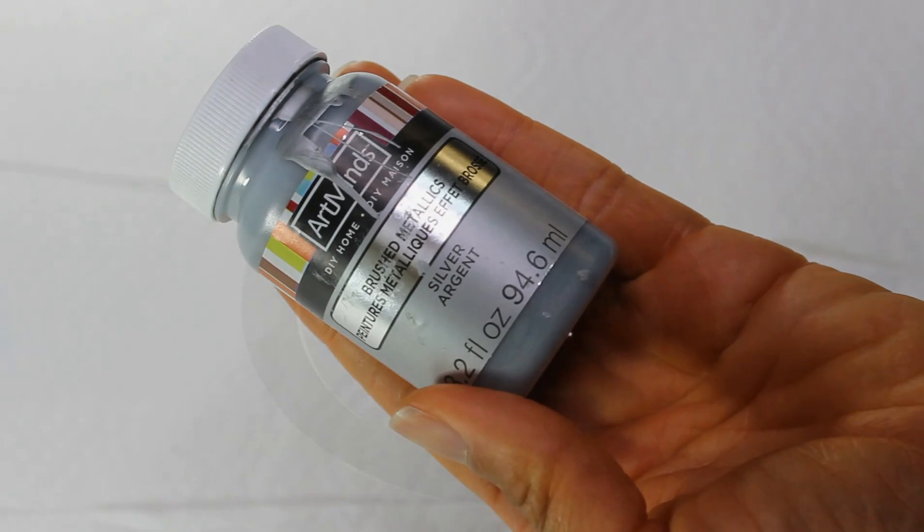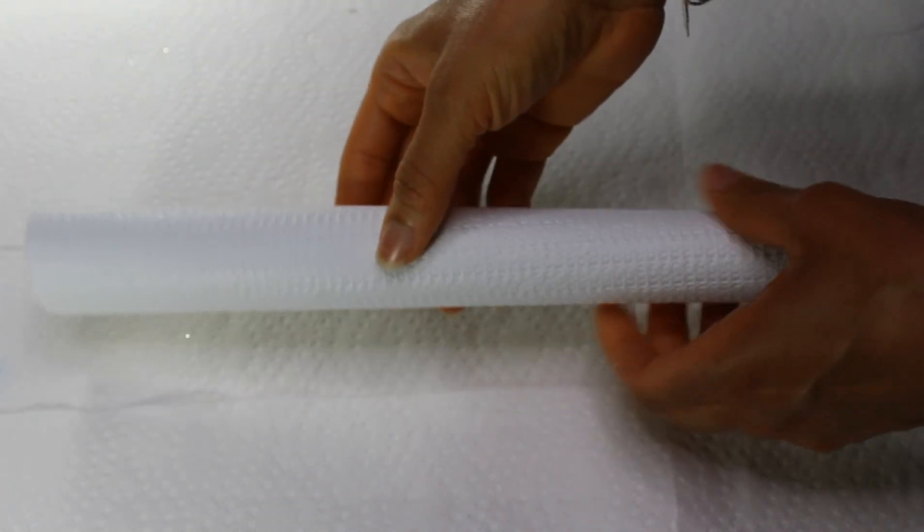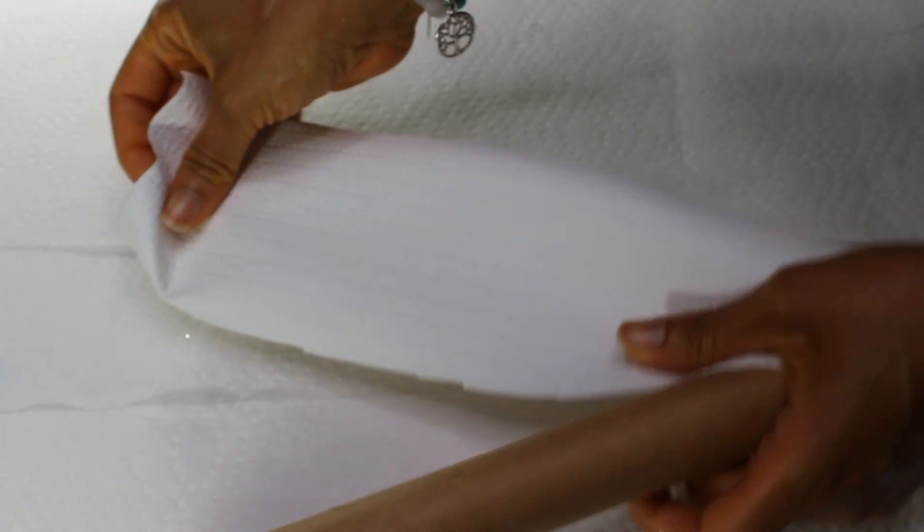I'm just going to be painting them with this metallic silver craft paint. Next I'm going to be going in with this shelf paper from Dollar Tree, and I just had enough to complete this project.